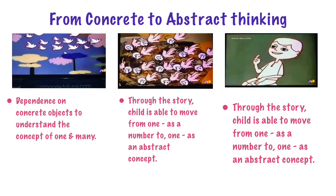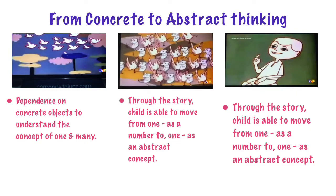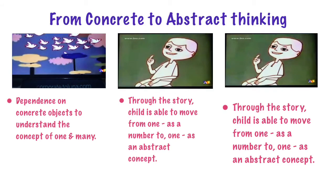Once the boy understood the concept of number one and many, the elder sister tells a story through which an abstract concept is taught to the child. We can watch this short clip again to understand how the elder sister is able to shift the boy's thinking process from the concrete concept of number to the abstract concept of unity. The boy in the third video clip shows the accomplishment of formal operational stage, where he is able to understand the meaning of one not only as a number but also as signifying strength, togetherness, and courage.